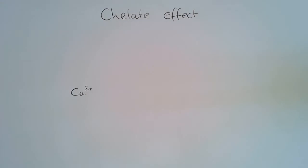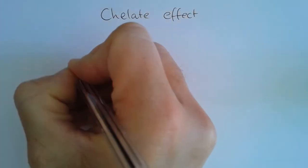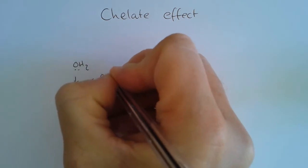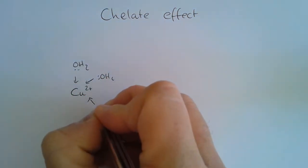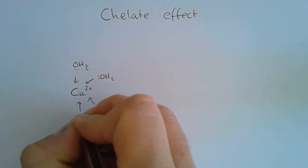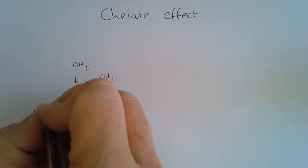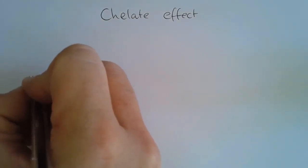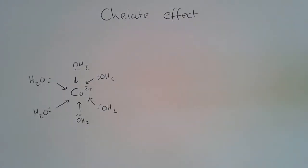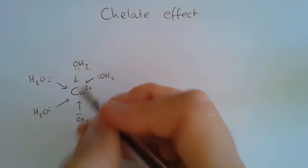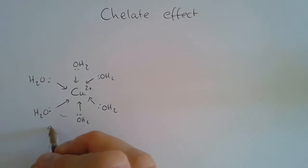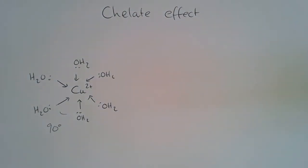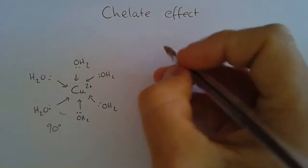Let's first remind ourselves about a simple transition metal complex. If we were to dissolve copper(II) ions in water, they would form a complex with six water ligands dative covalently bonded to the copper(II) ion in an octahedral geometry, with bond angles of 90 degrees.